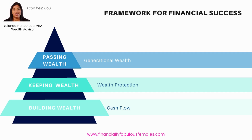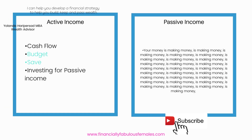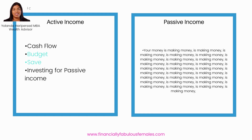My framework for financial success is three little words: building, keeping, and passing wealth. When building wealth, we're firstly looking for cash flow — something that gives us cash flow, for example our jobs or our businesses. Those all provide cash flow, and basically if we're working we have a thing called active income, where we're showing up at our job doing the nine to five.